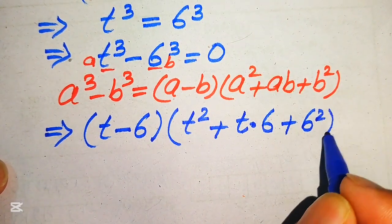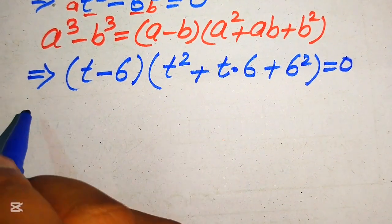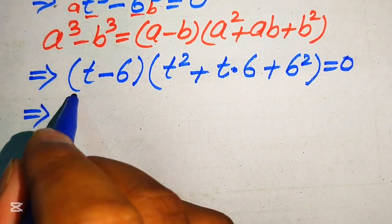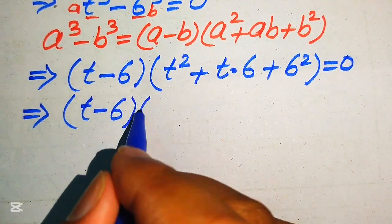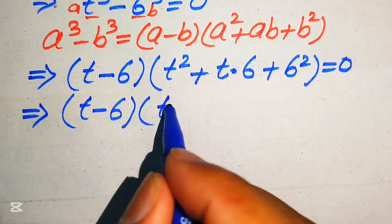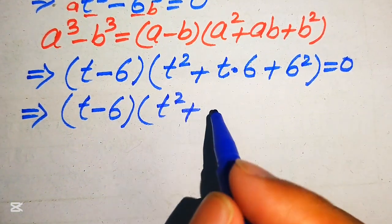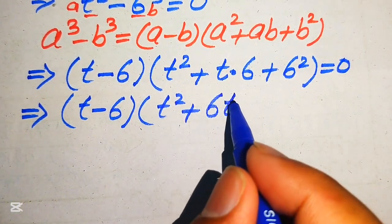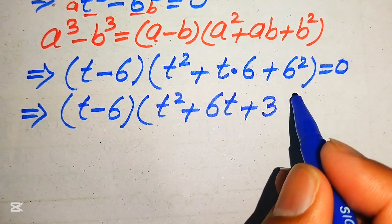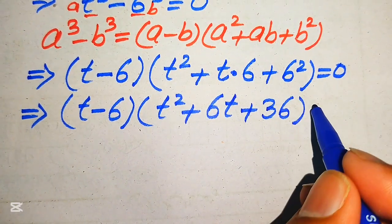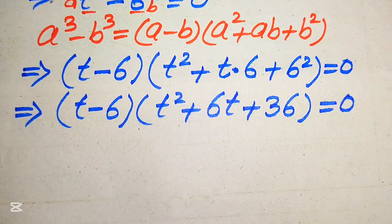...plus 6t plus 6 squared), giving 6 squared equals 36. So the full factored equation is (t minus 6)(t squared plus 6t plus 36) equals 0.